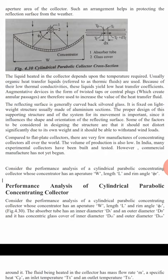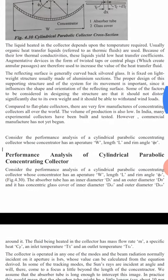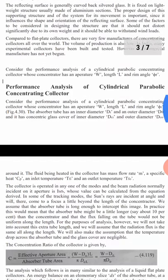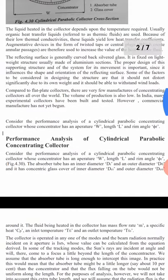The reflecting surface is generally curved back-silvered glass fixed on a lightweight structure usually made of aluminum. A proper design has to be made in order to withstand wind speed so it does not get damaged - the structure must be well designed. Flat plate collectors are available in the market, but this type of concentrating collector is not yet commercially manufactured.